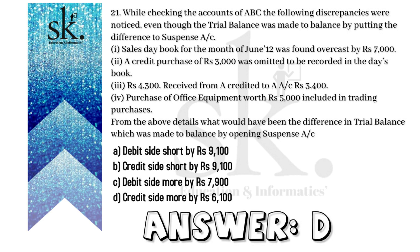From the above details, what would be the difference in trial balance which was made to balance by opening the suspense account? Sales day book for the month of June 2012 was found overcast by rupees 7,000. That means the credit side is higher by rupees 7,000, and sales goes to the credit side of the trial balance.